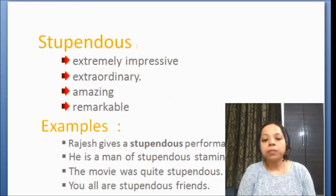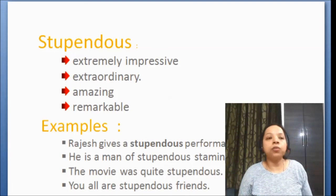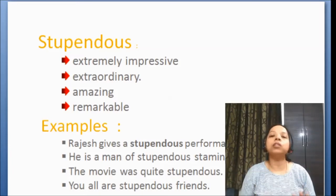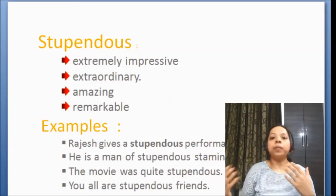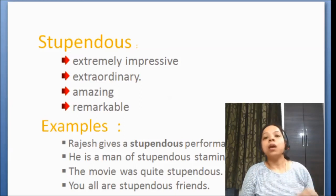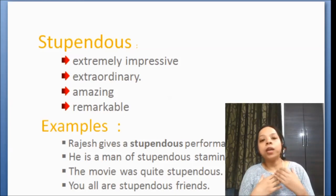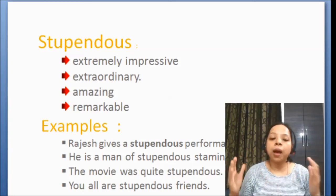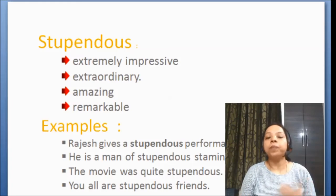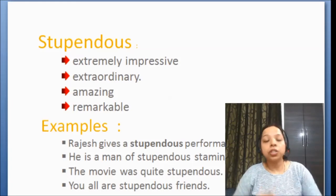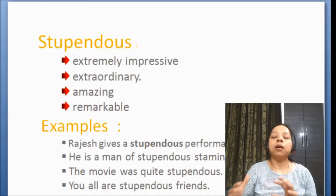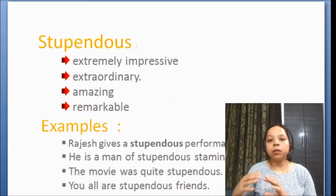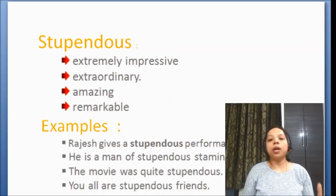Fourth example: 'You all are stupendous friends.' Like, when you want to say for your friends — aap normal friends nahi, aap bohut bohut achhi friends hai — choki you are with me in all my ups and downs and you are here for every need I have. Toh usme aap meri bohut bohut achhi saathi hai. So, you all are my stupendous friends.